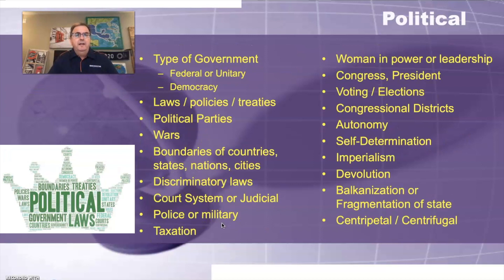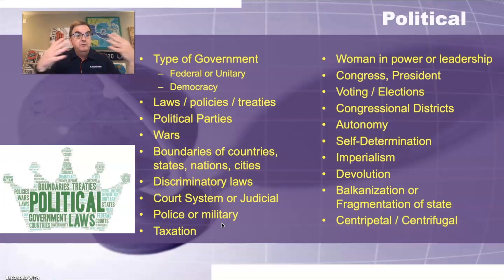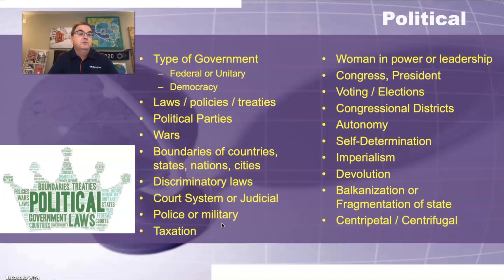Political relates to government. If you're talking about the type of government — federal or unitary state — democracy is fine to talk about here, but not capitalism. Democracy is our form of government. Laws, policies, and treaties are the things that governments do, and when you're talking about laws and policies, you're on super safe ground. Political parties are fair game but not a big topic in this class. Wars are political, especially between states, countries, or groups of people. Boundaries of countries, states, nations, cities, and gerrymandering — these are all political boundaries being drawn. Discriminatory laws, court systems, judicial systems, police and military are all generally in the political realm.